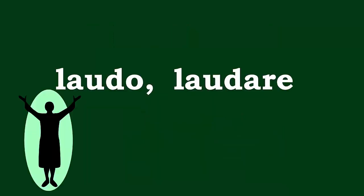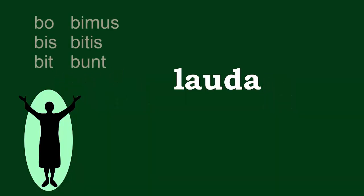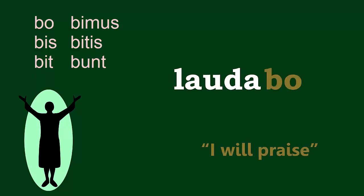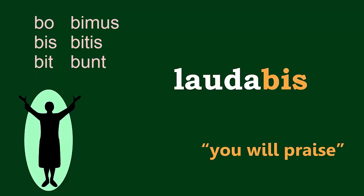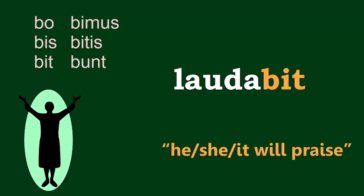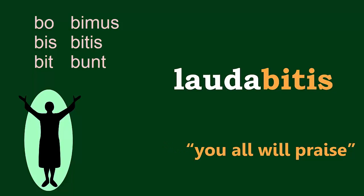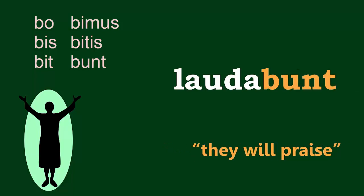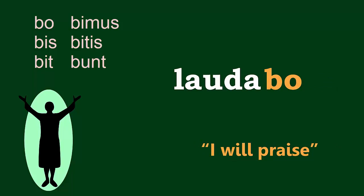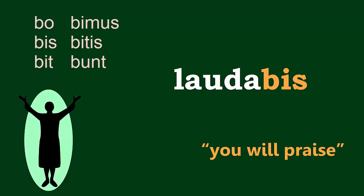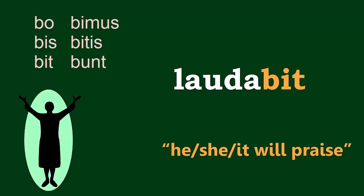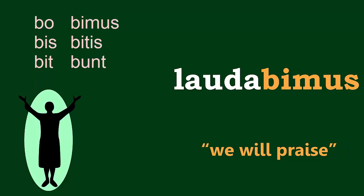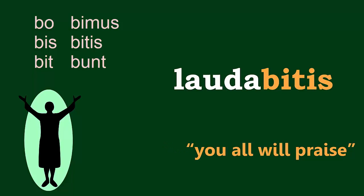What about laudo? You find the stem, then conjugate it with the bo, bis, bit, bimus, bitis, bunt endings. So it is: laudabo, laudabis, laudabit, laudabimus, laudabitis, laudabunt. Or: I will praise, you will praise, he/she/it will praise, we will praise, you all will praise, they will praise.